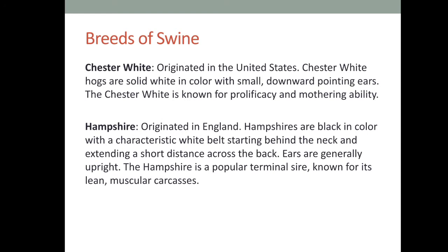Chester White: originated in the United States. These hogs are solid white in color with small downward-pointing ears. The Chester White is known for prolificacy and mothering ability. Hampshire: originated in England. Hampshires are black in color with a characteristic white belt around the shoulder area, extending a short distance across the back. Their ears are generally upright.